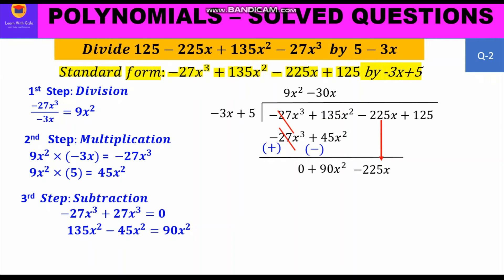We write the product below the new dividend and move to subtraction. Changing signs: +90x² becomes −90x² and −150x becomes +150x. Then +90x² cancels with −90x², and −225x + 150x gives −75x. We bring down 125, so the new dividend is −75x + 125.